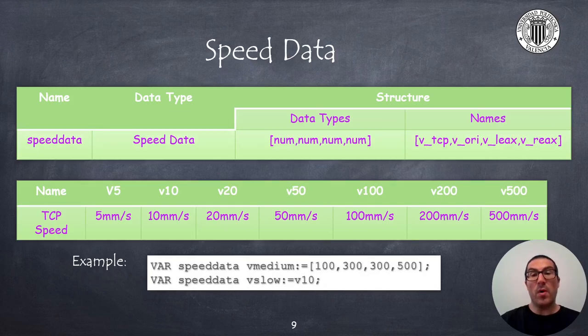Speed data includes four values. The first for defining the speed of the TCP in millimeters per second. The second one is the speed of the reorientation of the TCP in degrees per second, while the third and the fourth values are used to define the values of the linear speeds and rotational speeds of external joints. RAPID includes a set of predefined speeds that we will use to define the tool speed. The table below shows the name of some of the predefined speed values and the corresponding TCP linear speed. There are many other predefined values that I have not included in this table, so if you want to know all of them, again, I recommend you to access the reference manual.